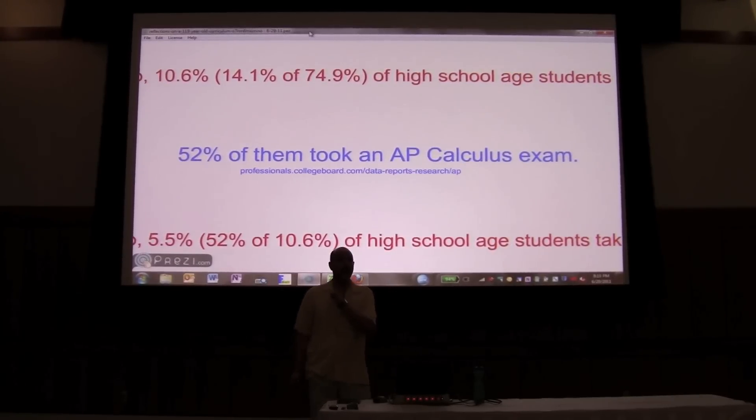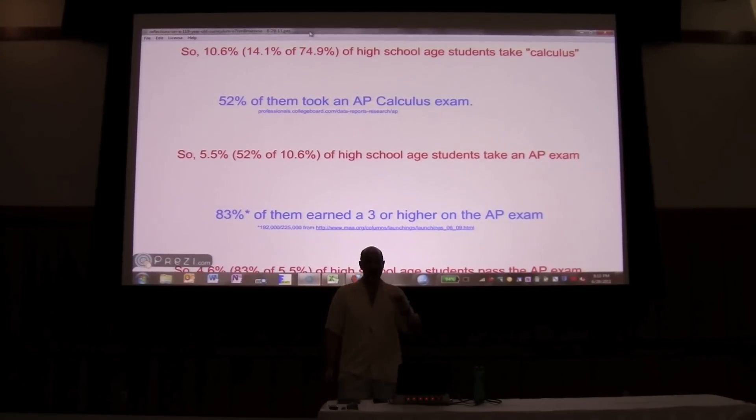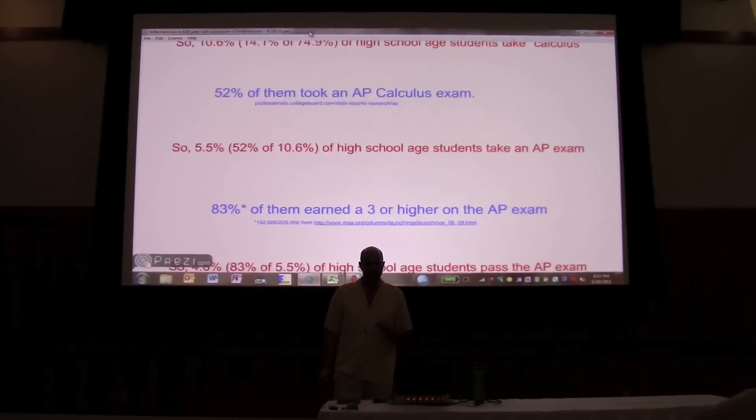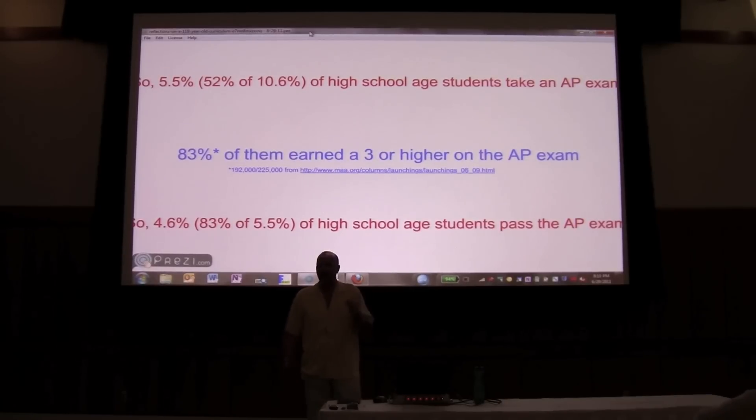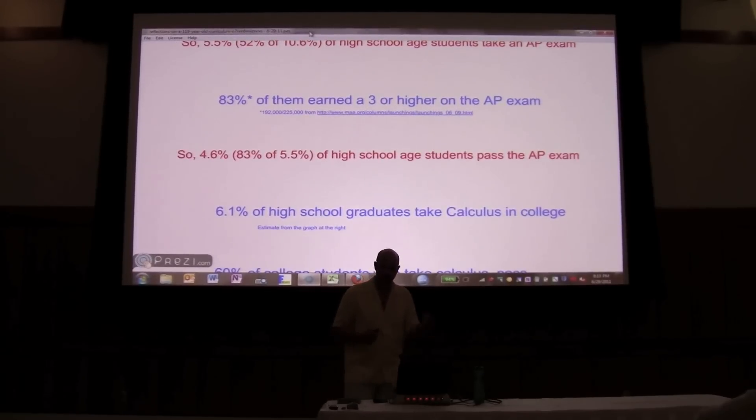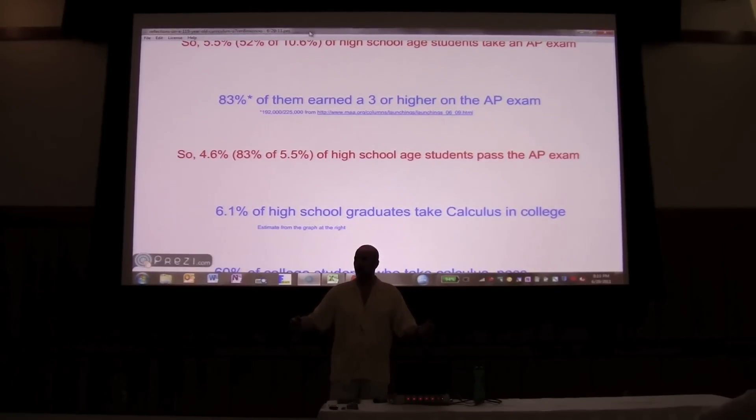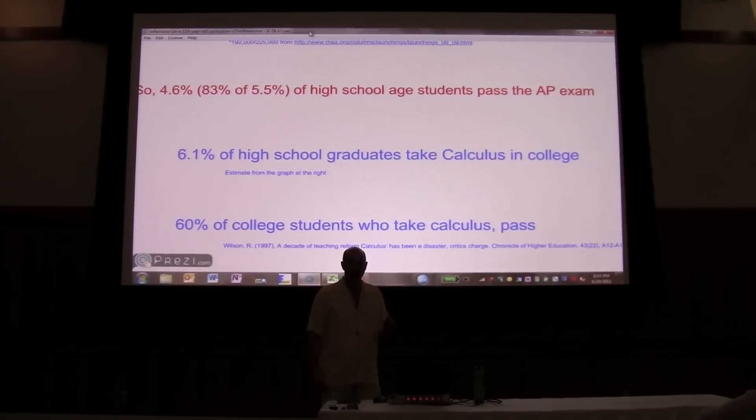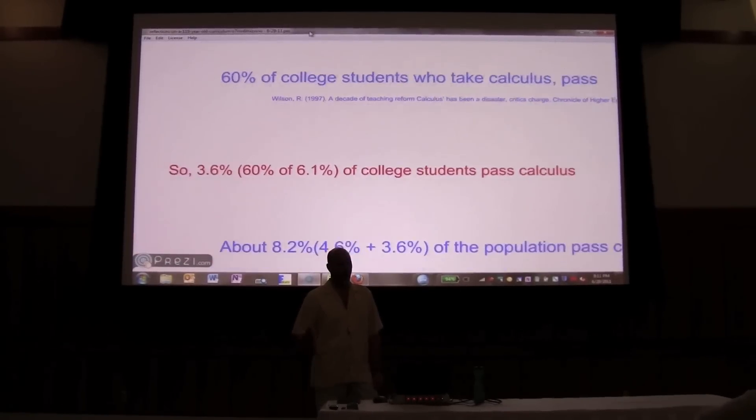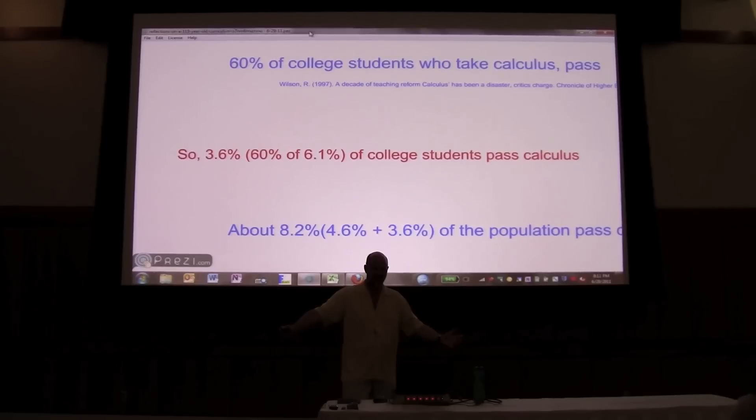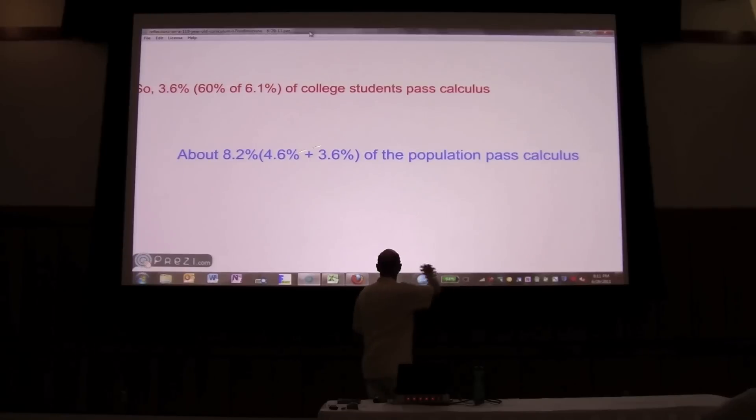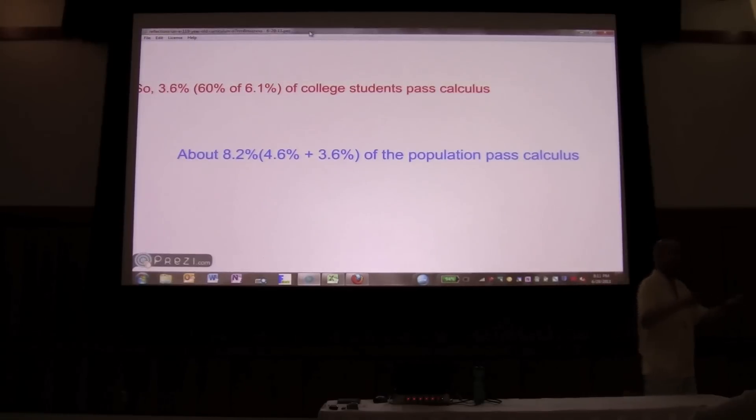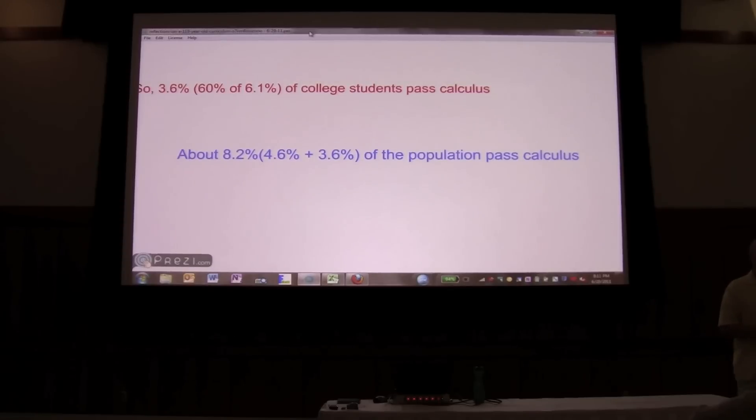Half of them took the AP calculus exam. So half of the 10.6% is about 5.5% of high school age students take an AP exam. Good number, 83% of them earned a three or higher on the AP exam, which most of us would say that's showing success in calculus. So 83% of that 5.5% is 4.6% of high school age students pass calculus. Only 4.6%. Now 6.1% of high school graduates take calculus in college, but 40% fail. So we have 60% of the 6.1% or 3.6% of college students pass calculus. And if you add those numbers together, this from high school and this from college, and actually there's overlap, there's a lot of overlap, I couldn't find those numbers, then you have approximately 8.2%.